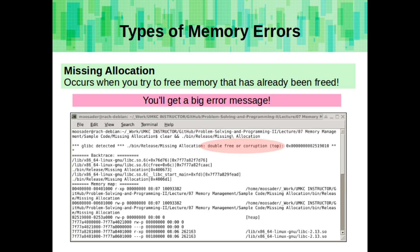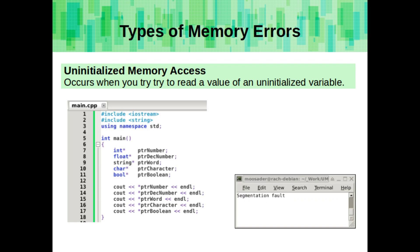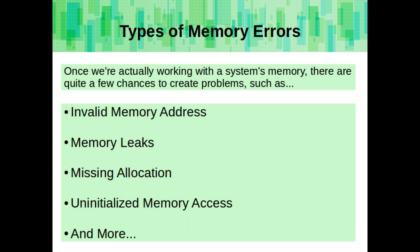Sometimes you'll get a big error message like this if you're trying to double free some memory address. Uninitialized memory access errors occur when you try to read a value of an uninitialized variable. So keep all of these errors in mind when you're working with pointers and dynamic memory allocation.